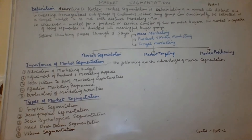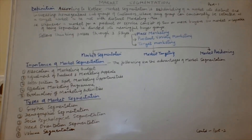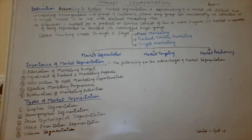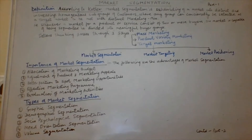Whenever a market for a product or service consists of two or more buyers, the market is capable of being segmented — divided into meaningful buyer groups. From the point of view of the marketing manager, the seller's thinking passes through three stages: whether to go for mass marketing, whether to go for product variety marketing, or whether to focus on target marketing. These decisions are mainly dependent upon the nature and type of the product.